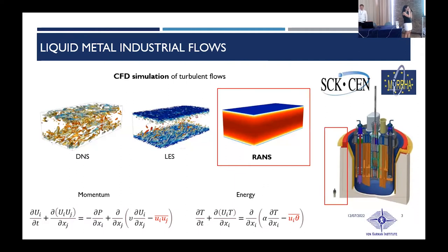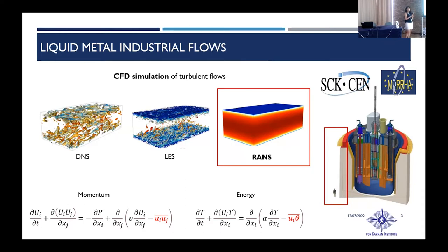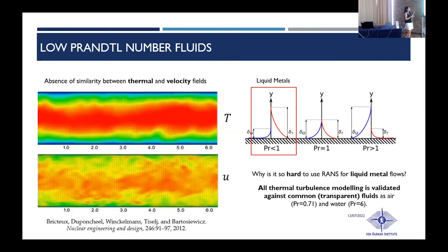The numerical investigation of these flows is very important for good design. However, the computational domains involved are usually too complex and too wide to go for DNS or LES. Nowadays, the RANS approach still remains the only feasible approach for this kind of flow. The Reynolds averaging brings out two additional terms in the momentum and energy equations: the turbulent heat flux and the Reynolds stress tensor. In particular, the modeling of the turbulent heat flux is critical in the presence of heavy liquid metals.